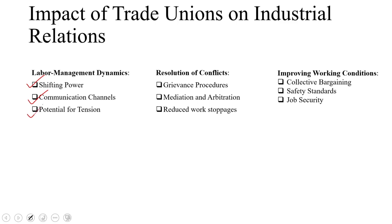There is potential for tension in labor-management dynamics — negotiations can be contentious and strikes or protests can create tension — but a well-functioning union-management relationship can foster stability. For conflict resolution, unions help establish clear grievance procedures ensuring fairness and transparency, can play a role in mediating disputes or advocating for third-party arbitration in complex cases, and by providing structured channels for resolving grievances, can prevent minor issues from escalating into major disputes.